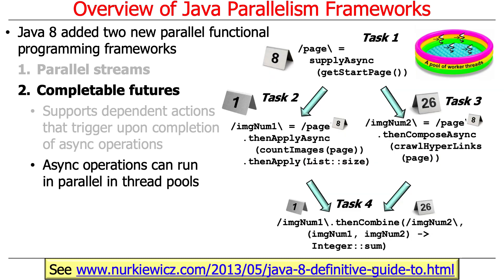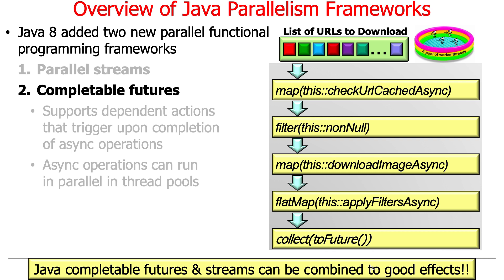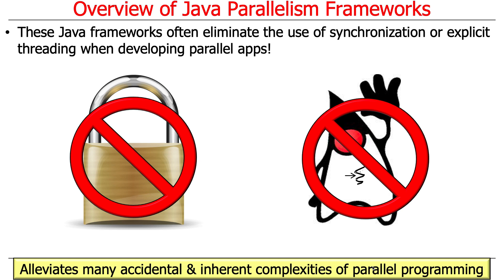You can also combine the completable futures model, which is all about asynchrony, with the streams model to get a functional programming streams approach where behaviors run asynchronously. One of the great things about these frameworks is that if your domain requirements are set up correctly, you don't have to worry about synchronization or threading — all that is pushed into the framework, so you just work on computation. That alleviates a lot of the complexity of parallel programming.